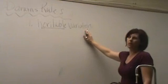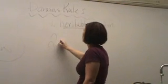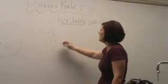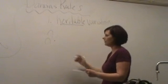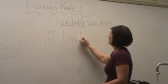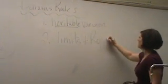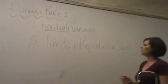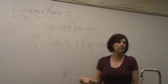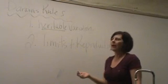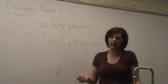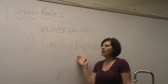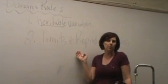And the second big rule that Darwin proposed in order for natural selection to be the mechanism for evolution is that you have to have limits to reproductive success. So that's just a fancy way to say what? Not everybody has babies. Or some people are going to have more babies than others, right? So what do you think, if we were looking at a population of bunnies, jackrabbits out in the desert. What do you think could be some limits on the bunnies being able to have babies in a population?